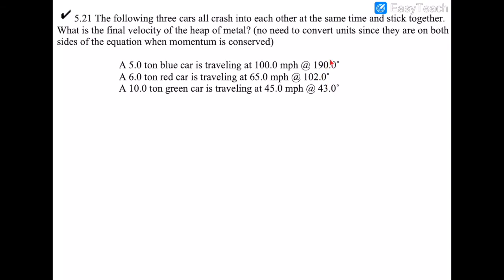What we do need is the momentum vector components for each car. Since the angles are given from north, we use the standard vector rule: the i-hat component is always the momentum magnitude times the sine of the angle, and the j-hat component is the momentum magnitude times the cosine of the angle. This way we don't have to worry about small-angle adjustments.